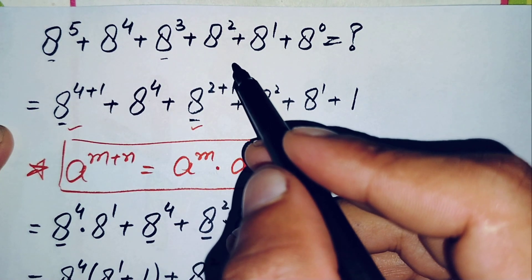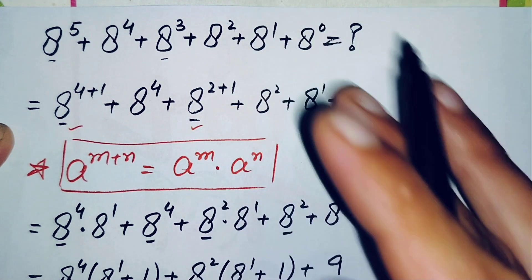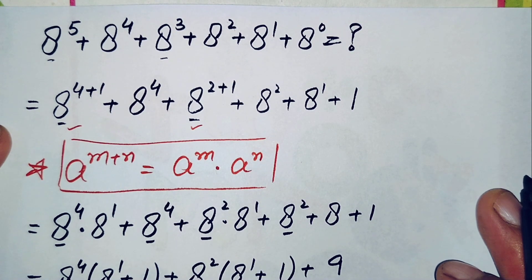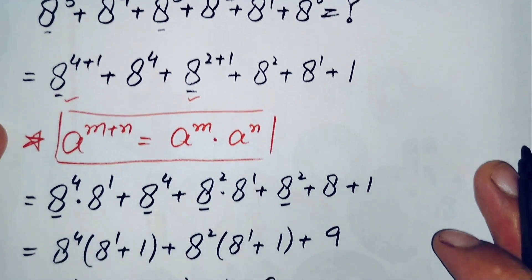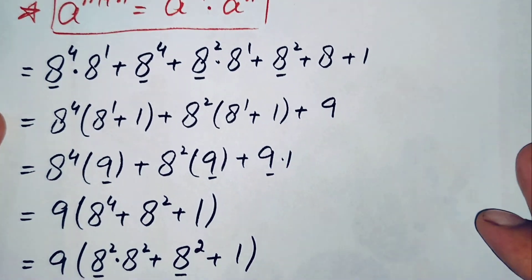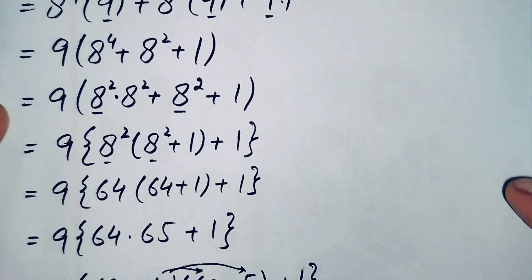So finally 37449 is the value of this interesting simplification math problem. If you like this video, don't forget to subscribe to my YouTube channel. Thanks for watching.